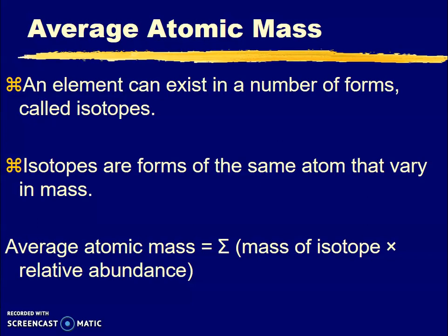This is a quick video showing you how to calculate average atomic mass. First, know that an element can exist in a number of forms called isotopes. Isotopes are forms of the same atom that vary in mass.